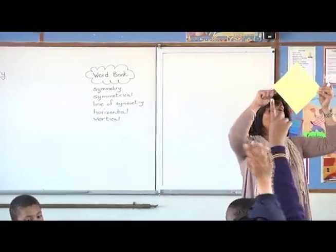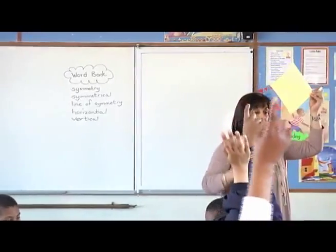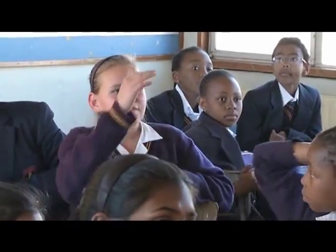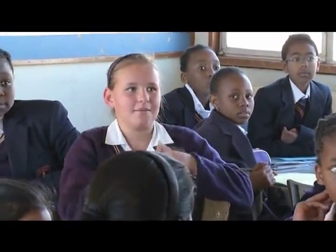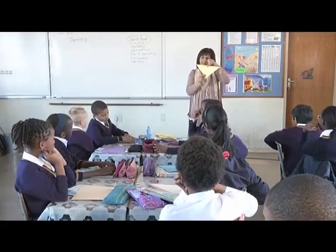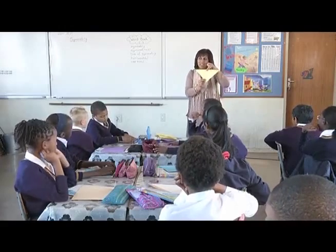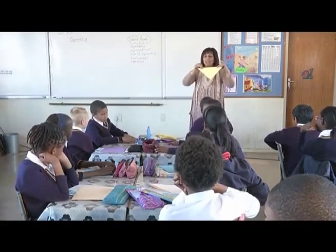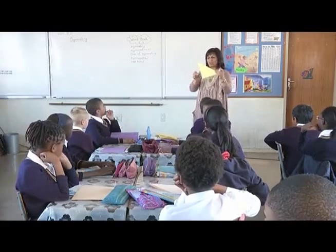How would I know if this is a line of symmetry? It's the same on both sides, and as you fold it, it's the same — it will fold over and fit exactly into the other part. Then that is a line of symmetry.